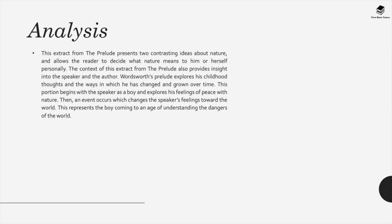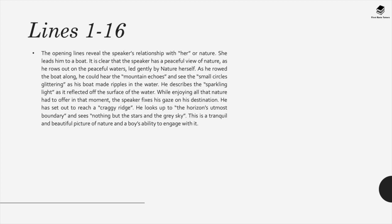The poem provides insight into the speaker and the author, exploring Wordsworth's own childhood and the ways in which he changed over time. It begins with the speaker as a boy at peace with nature, then an event occurs which changes his feelings towards the world — representing the boy coming of age and understanding the dangers of the world, losing his innocence.